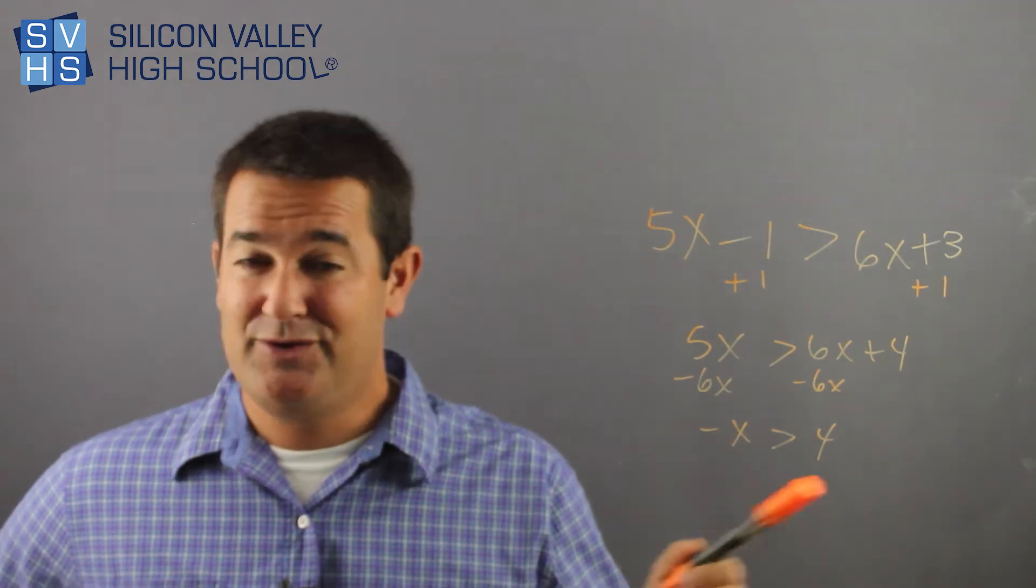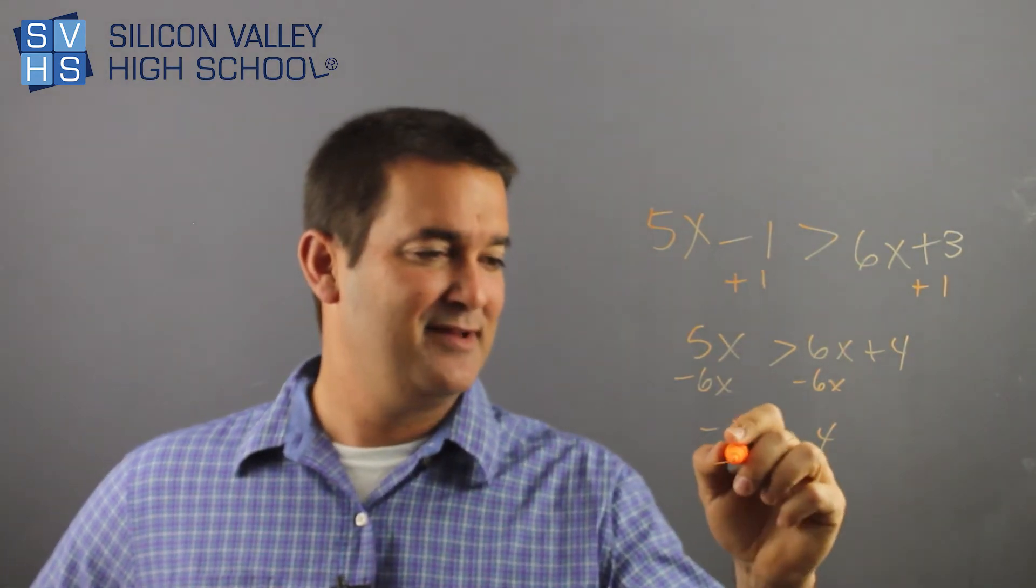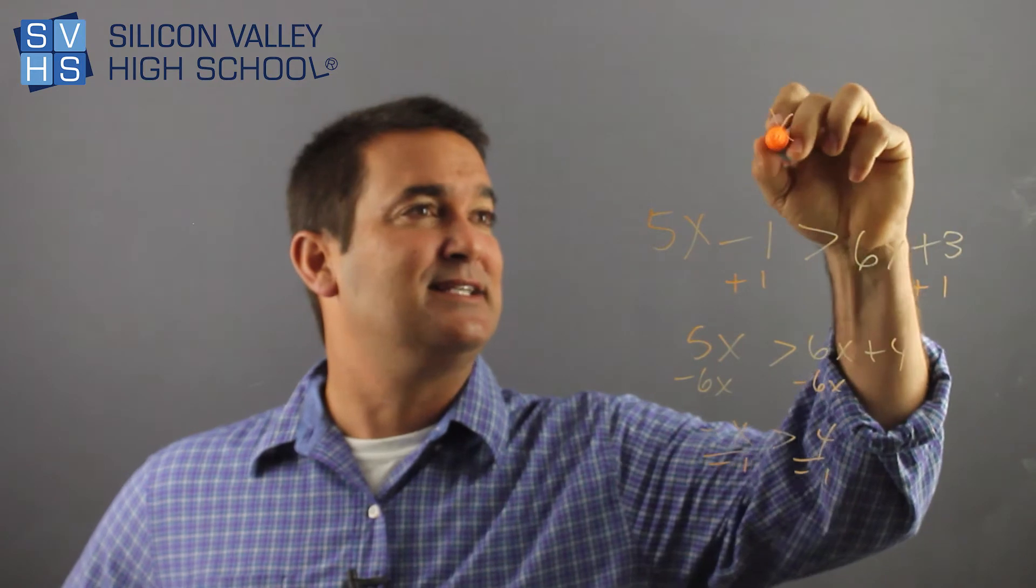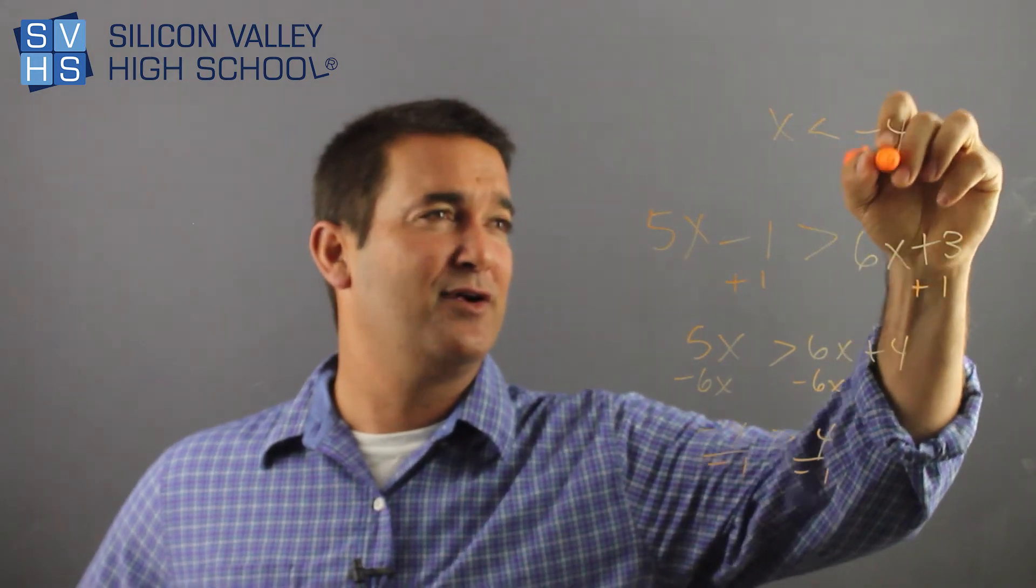Drum roll. This is the part you guys enjoy. Divide by negative. Divide by negative 1. Divide by negative 1. X is less than negative 4. Done.